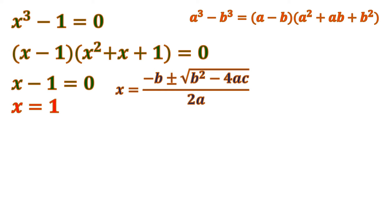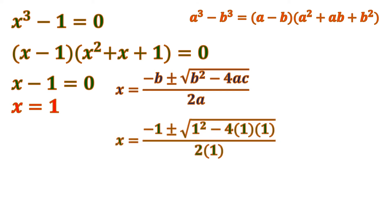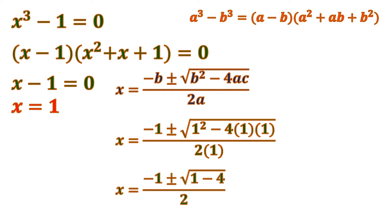Let us substitute where a is 1 — the numerical coefficient of x squared — and b is 1, the numerical coefficient of x, and c is the constant 1. So let us substitute: b equals 1, a equals 1, and c equals 1. All the numerical coefficients are 1. Then simplifying: 1 squared is 1, and 4 times 1 times 1 is 4.